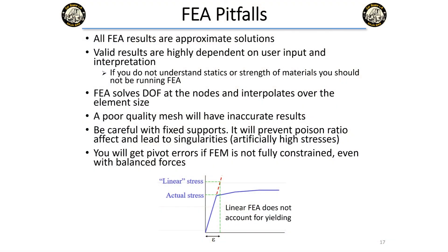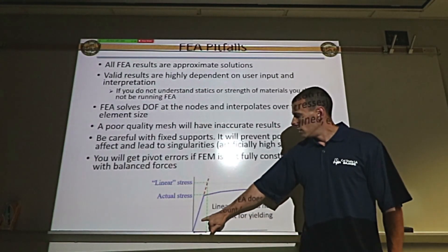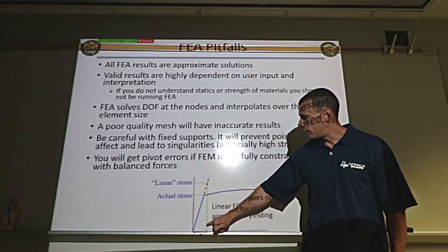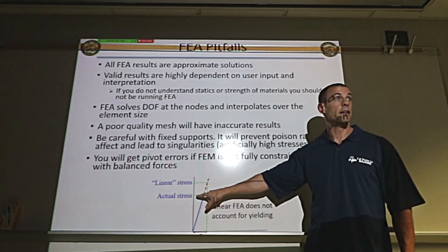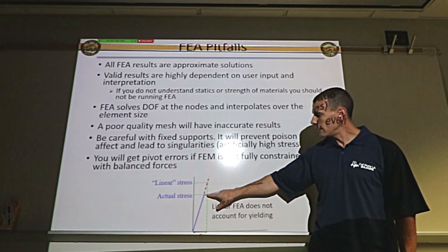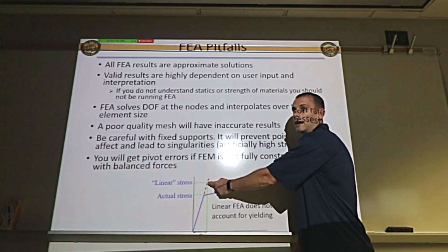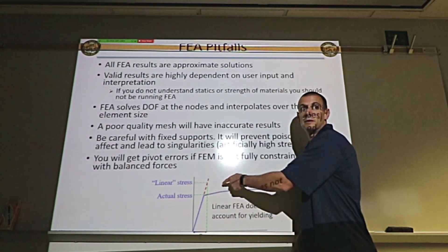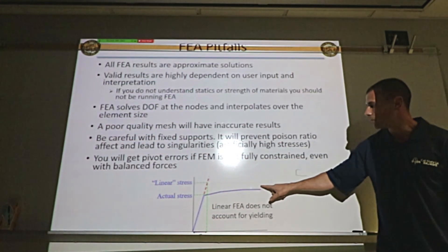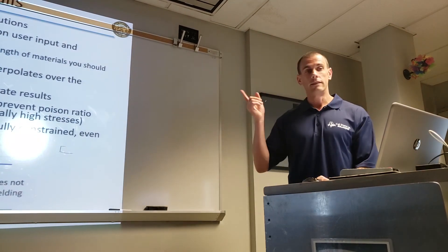Remember it's a linear analysis unless you specifically choose non-linear, which accounts for yielding. Most of the time you're doing linear analysis. If a part is yielding, the actual stress in it is lower than the linear prediction because after yielding the stiffness drops. FEA in linear mode will report stress far above the yield point because it doesn't know the part is yielding — it still assumes it's fully elastic and stiff. So you might think the part fails when it actually just yielded. Keep in mind that the analysis is linear.